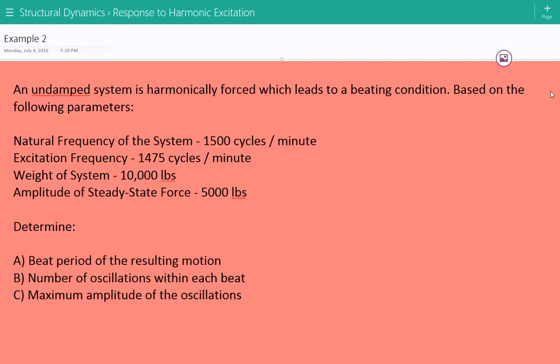Based on the following parameters, the natural frequency of the system is 1,500 cycles per minute. The excitation frequency, meaning the frequency of the harmonic force, is equal to 1,475 cycles per minute.